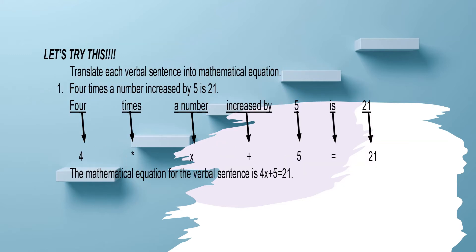Let's try this. We are going to translate each verbal sentence into a mathematical equation. Example number one: Four times a number increased by 5 is 21.